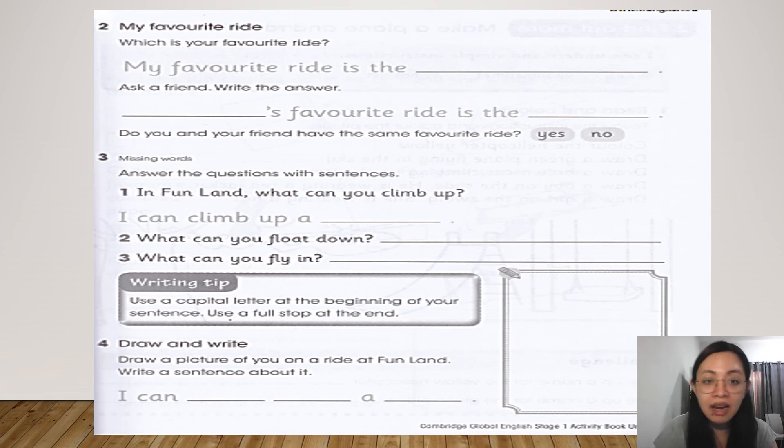Answer the questions with sentences. In the fun land, what can you climb up? I can climb up a, look at your learner's book. What can you climb in the fun land? Next, what can you float down? Third, what can you fly in? And this time, this is the same activity on your learner's book. Draw and write. Draw a picture of you on a ride at fun land. Write a sentence about it.